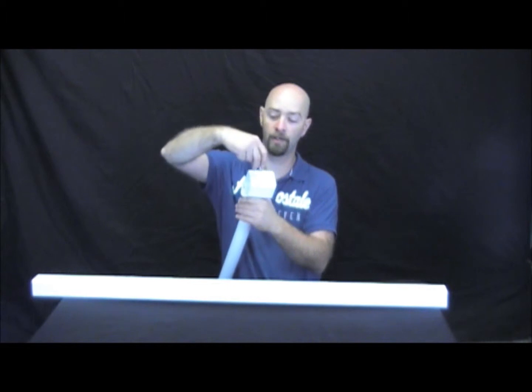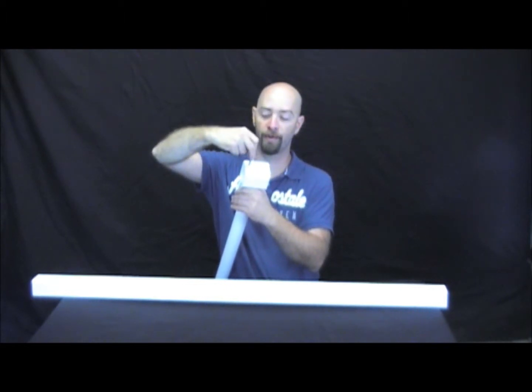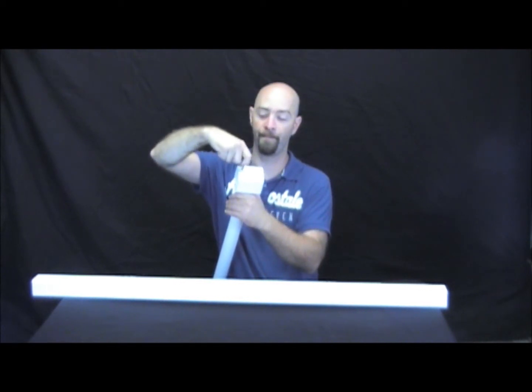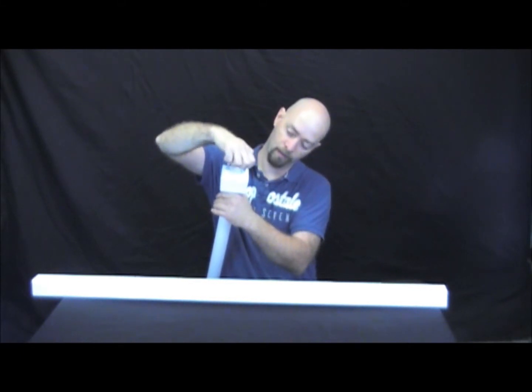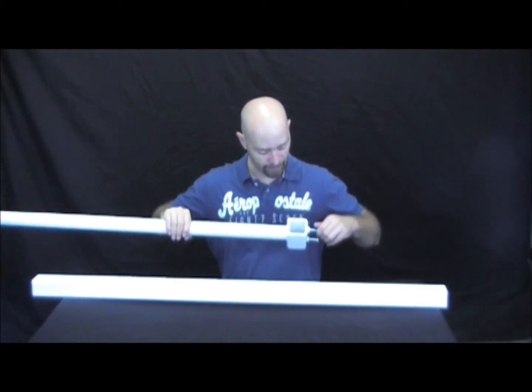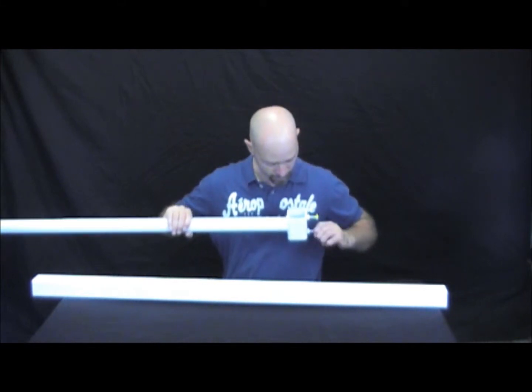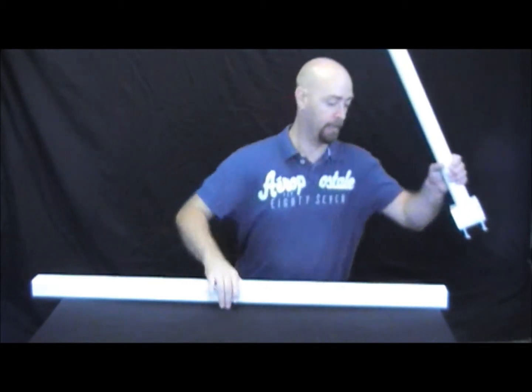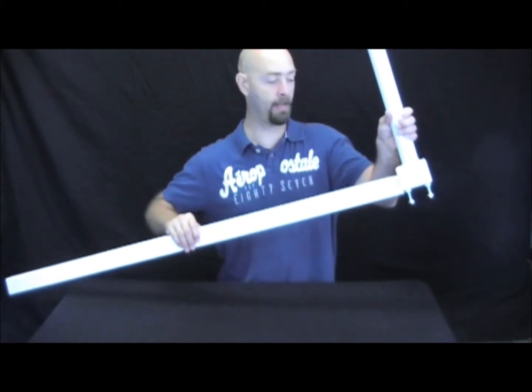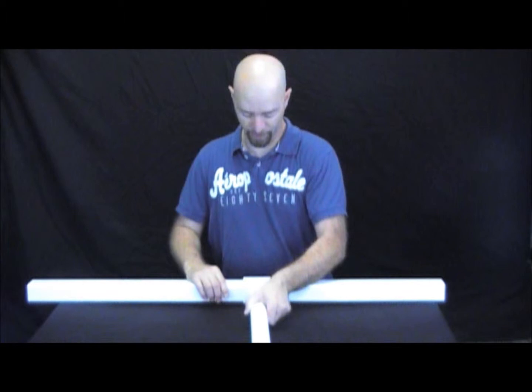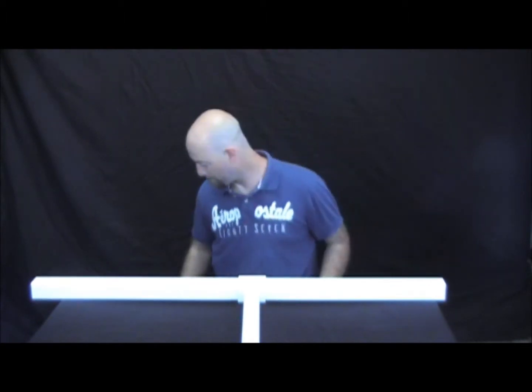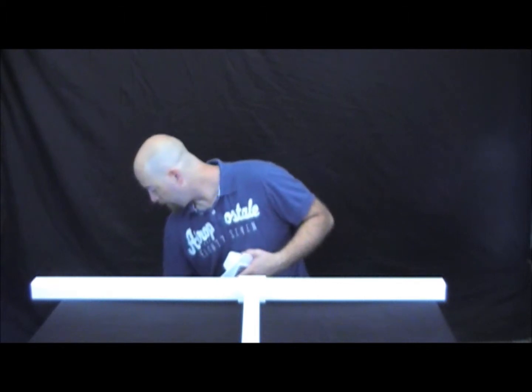Then we want to put screws, these threaded bolts, and you want to screw them in deep enough that it hits the surface of the metal here, but isn't out far enough that it's going to scratch up the square tubing as we slide it through.